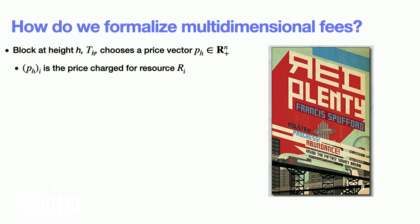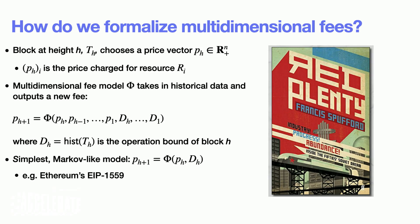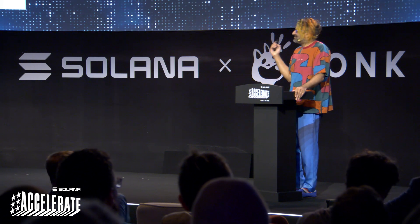A multidimensional price simply states how much each resource costs at each slot height. The multidimensional fee model takes in those histograms, the previous prices, and gives you a new price. The simplest version only depends on the last block's demand and prices. But the devil's in the details — you can look to the Soviet Union in the 1950s to see what happens when you choose this function incorrectly. So I'll present the dialectic here: there's good and bad with multidimensional fees, and we'll talk about where in Solana people are really interested in doing this.